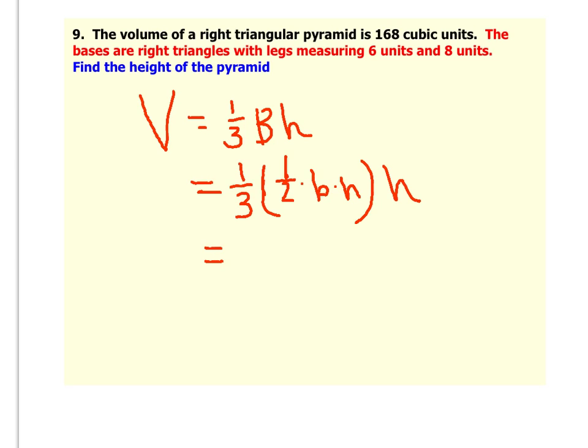Now we're going to plug in the volume. They tell us it's 168. And we have that is equal to one-third times one-half. Now, nice enough, they gave us the legs of this right triangle. So the six and the eight are what you're going to use for the base and the height of that right triangle. And we will be able to solve this for h.